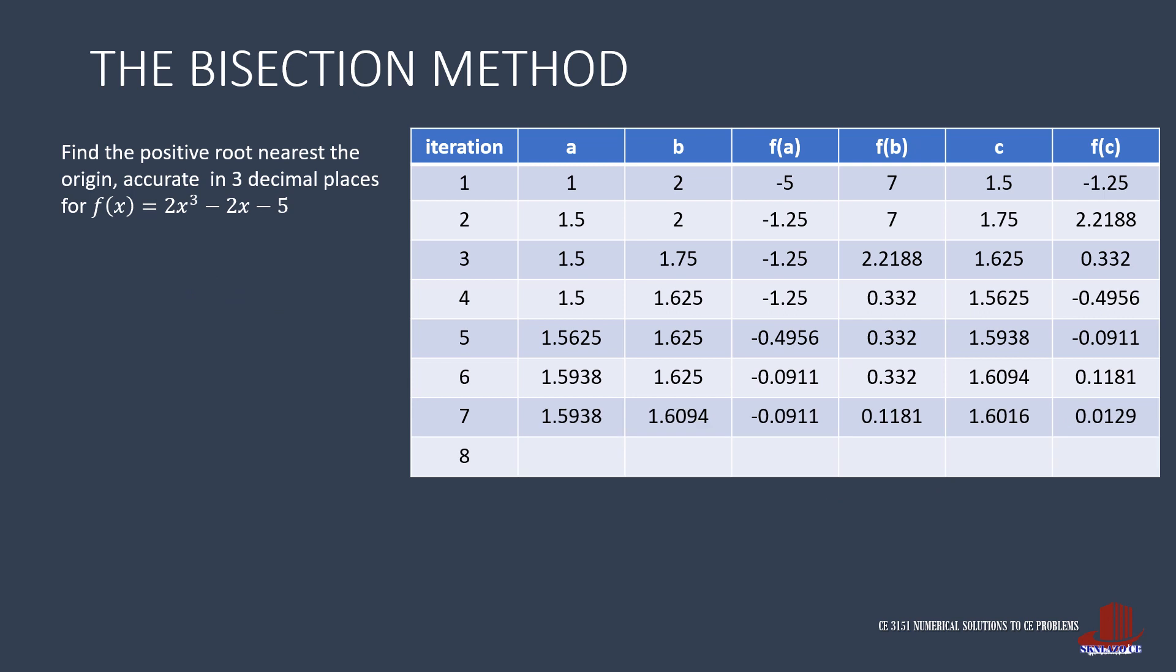Just keep on iterating. This time, B is 1.6016 with F of B as 0.0129. A is still 1.5938, also with F of A the same as negative 0.0911. C is then computed as half of 1.5938 plus 1.6016, giving 1.5977. The F of C of 1.5977 becomes negative 0.0393. Having F of C as negative, we replace A with a new C.